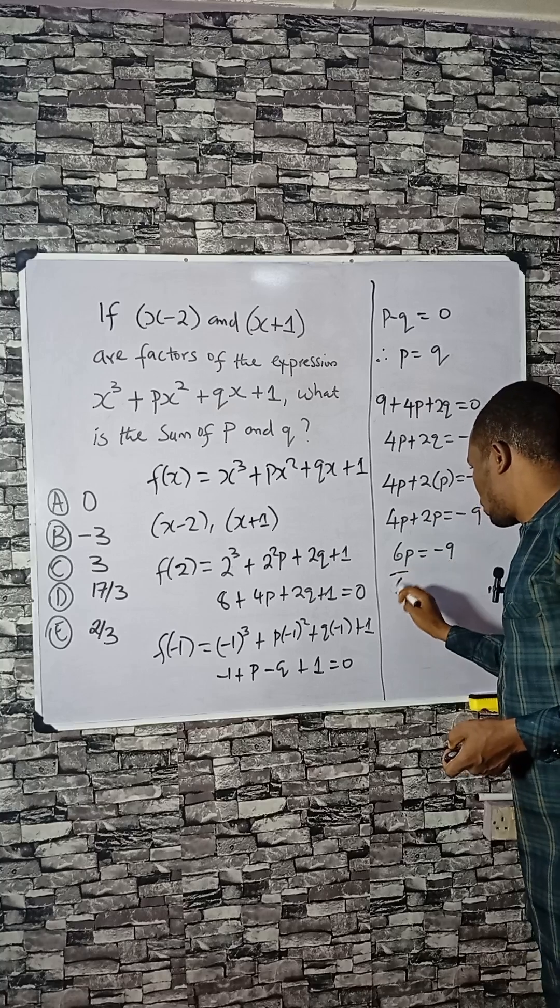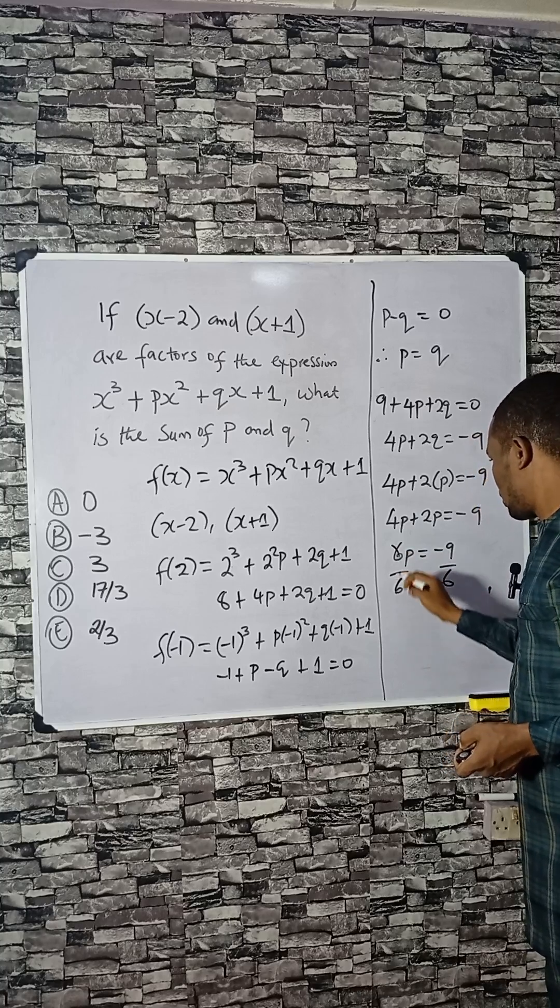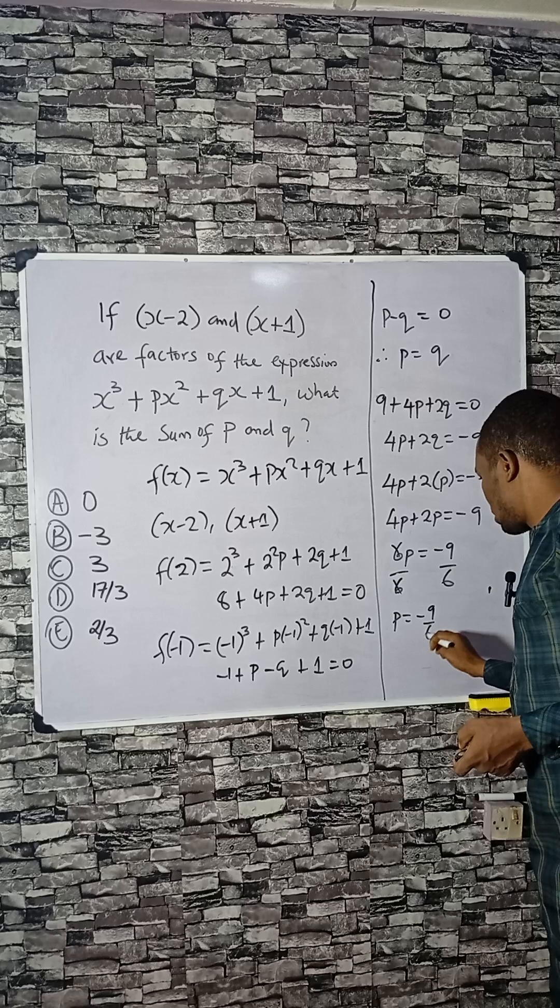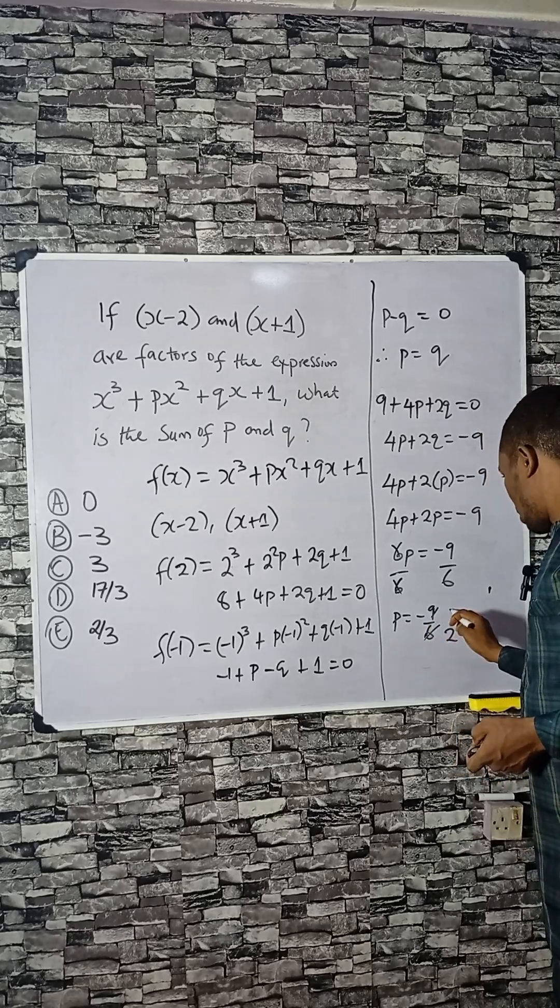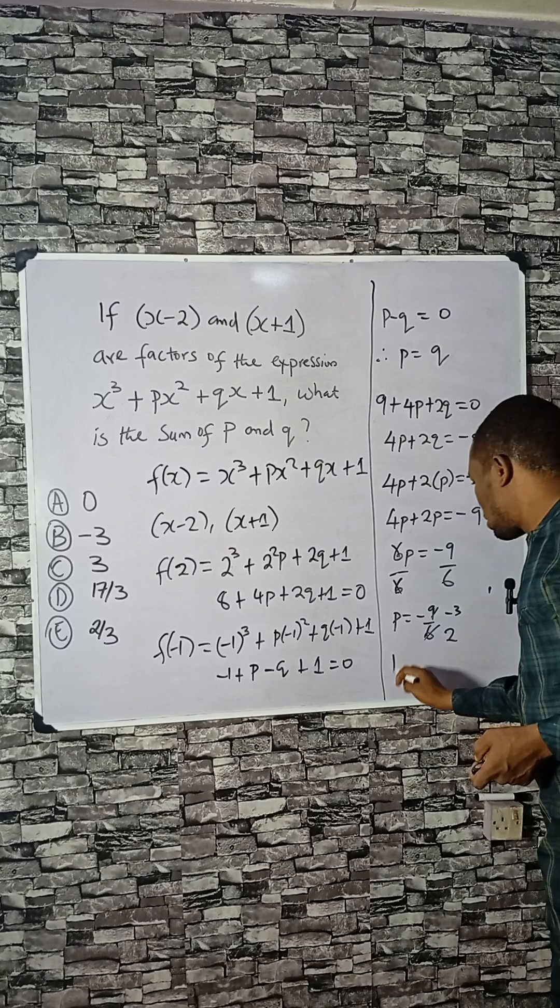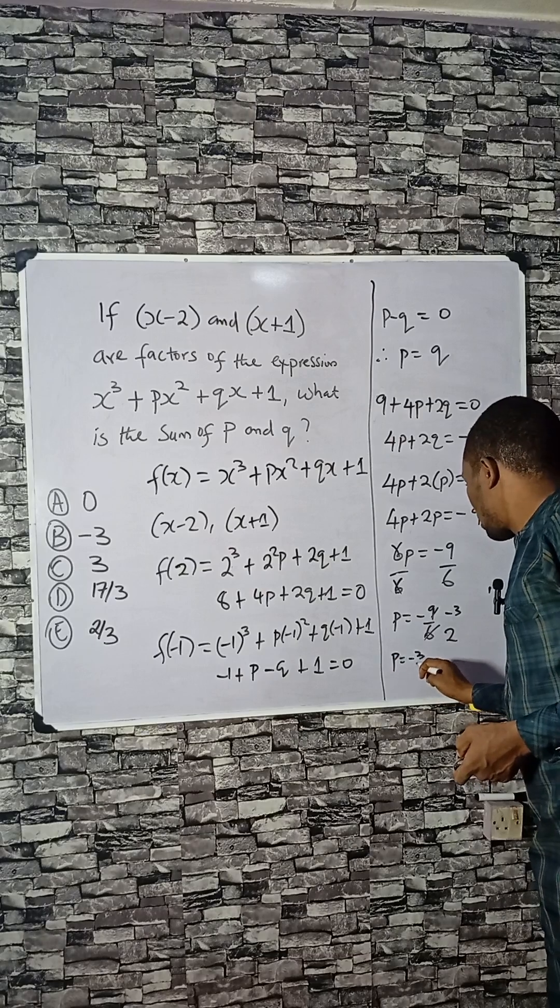So p equals minus 9 divided by 6. Simplifying, I have p equals minus 3 over 2.